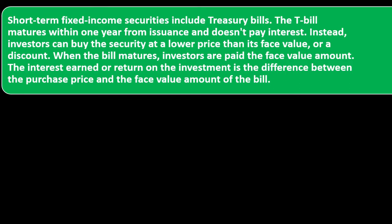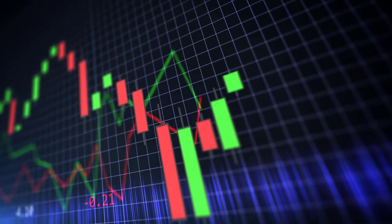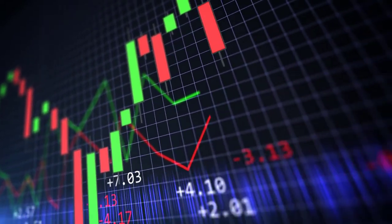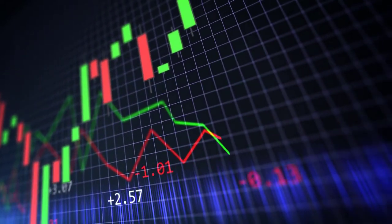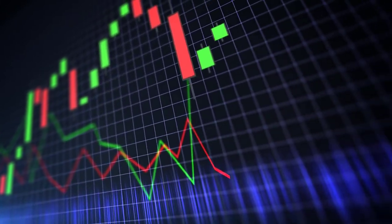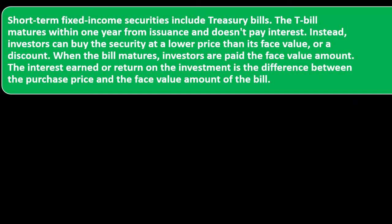Short-term fixed income securities include treasury bills — T-bills — which mature within one year from issuance and don't pay periodic interest. Instead, investors buy the security at a lower price than its face value — at a discount. When the bill matures, investors are paid the face value amount. The interest earned or return on investment is the difference between the purchase price and the face value amount.